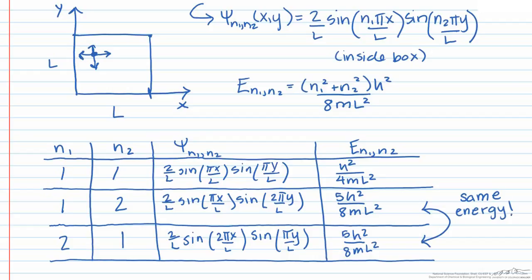So even though these are different states with different wave functions, they correspond to the same energy. This feature is called degeneracy, and in this specific case we would say that the state with energy 5h² over 8mL² is doubly degenerate.